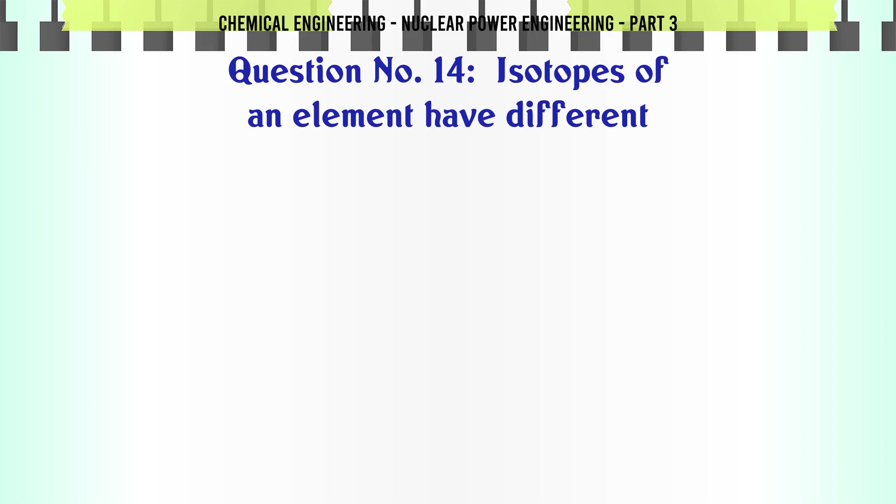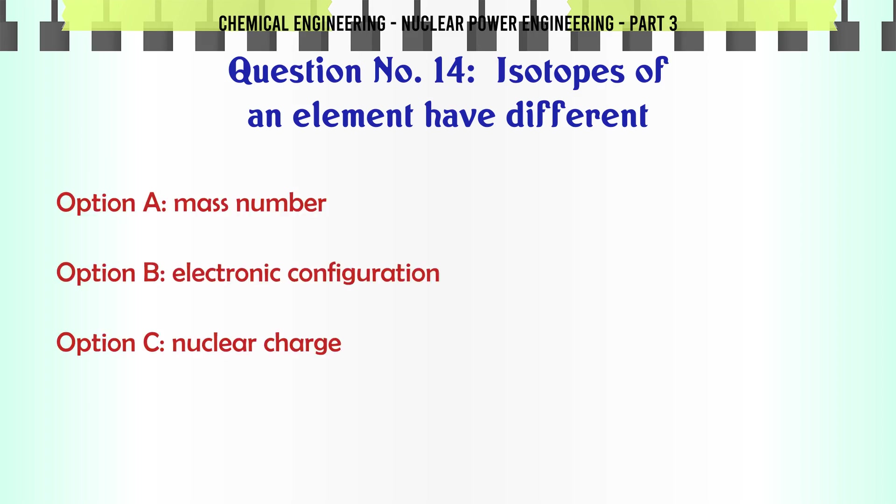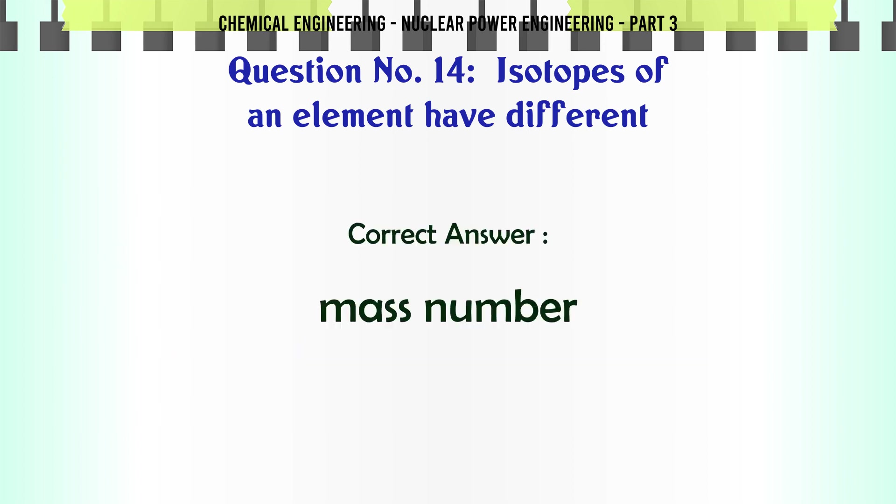Isotopes of an element have different mass number. The correct answer is mass number.